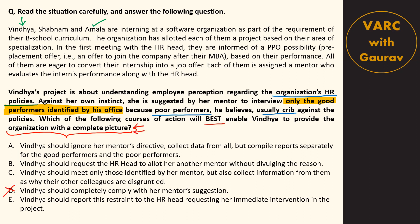Option A says Vindya should ignore her mentor's directives, collect data from all employees, but compile reports separately - separating good performers from bad. The second half sounds great in theory. If there are inherent biases as the mentor suspects, those biases would become clearly visible. However, the big pragmatic problem is that you are violating your mentor's explicit instructions. This is an invitation to trouble. Your mentor has told you something - yes, it is a bit shady - but you cannot be equally dismissive. Steps like this work in movies, not in the real workplace. We have to be pragmatic and cannot be so bold and dismissive of our senior's instructions. Option A is also rejected.